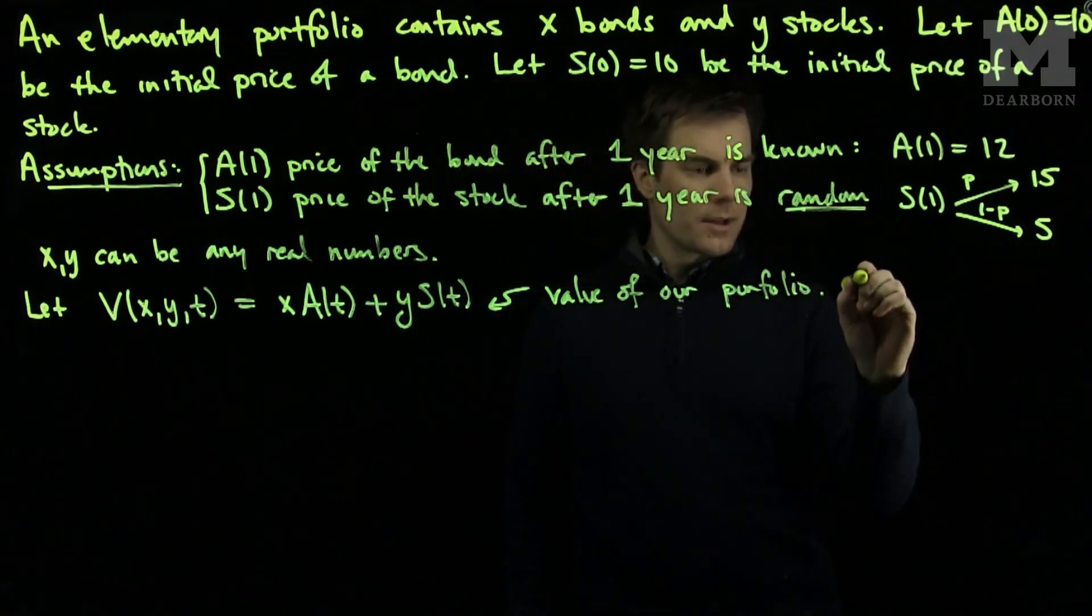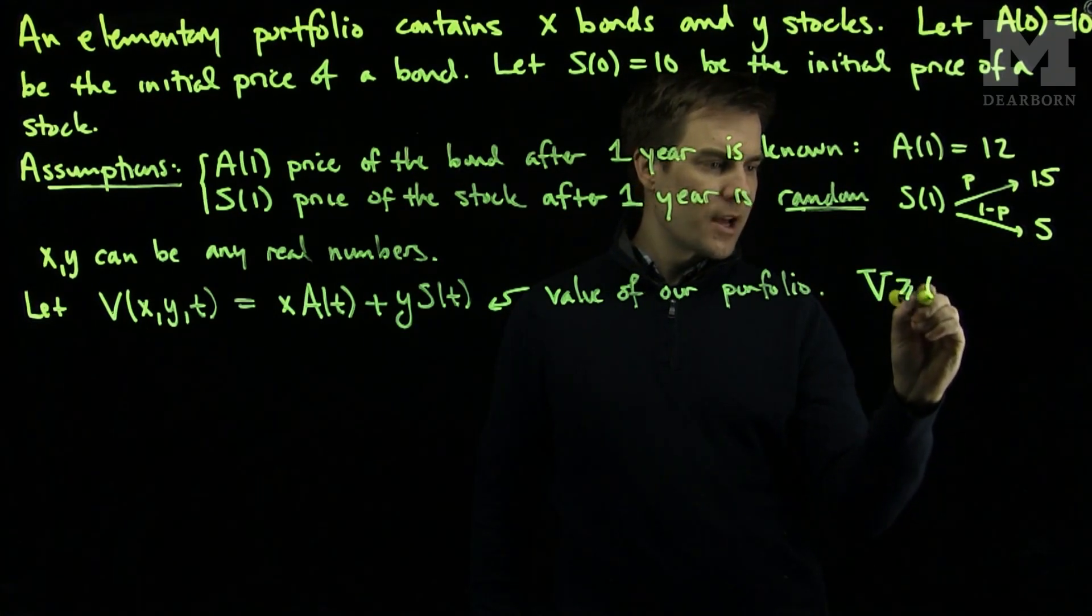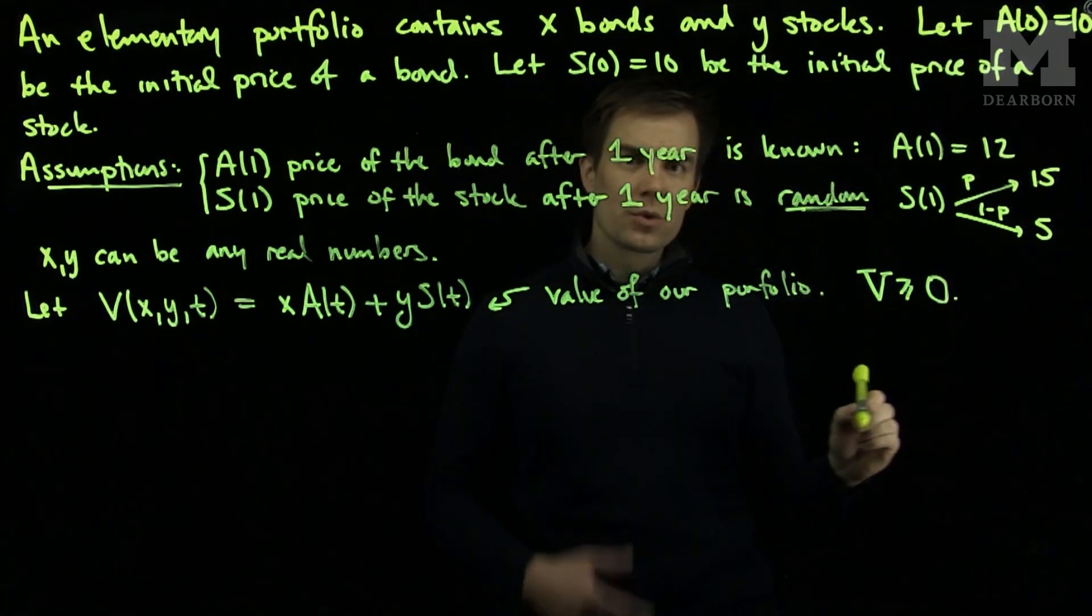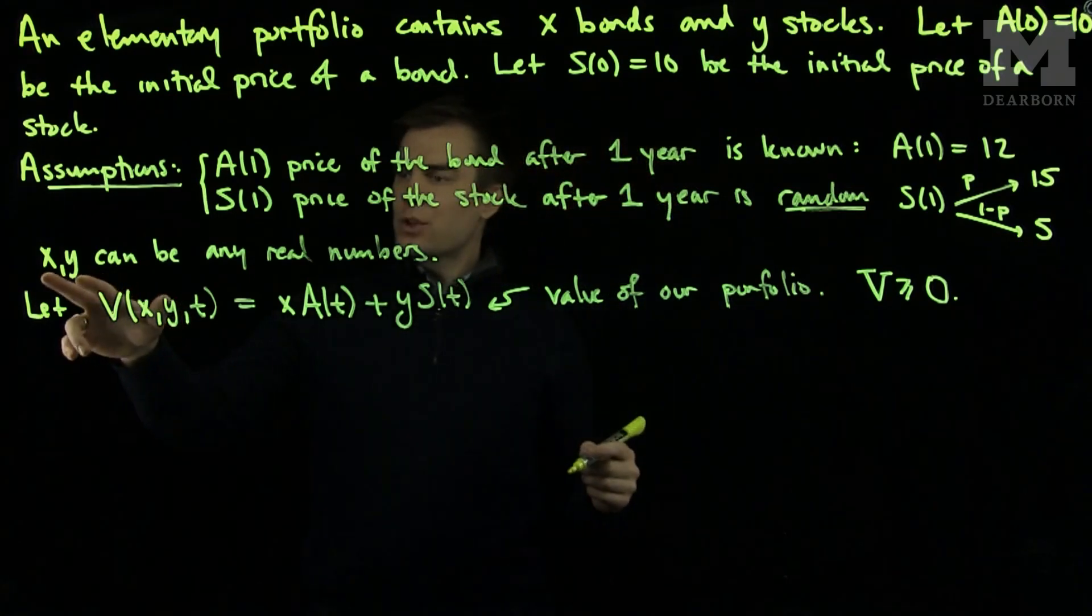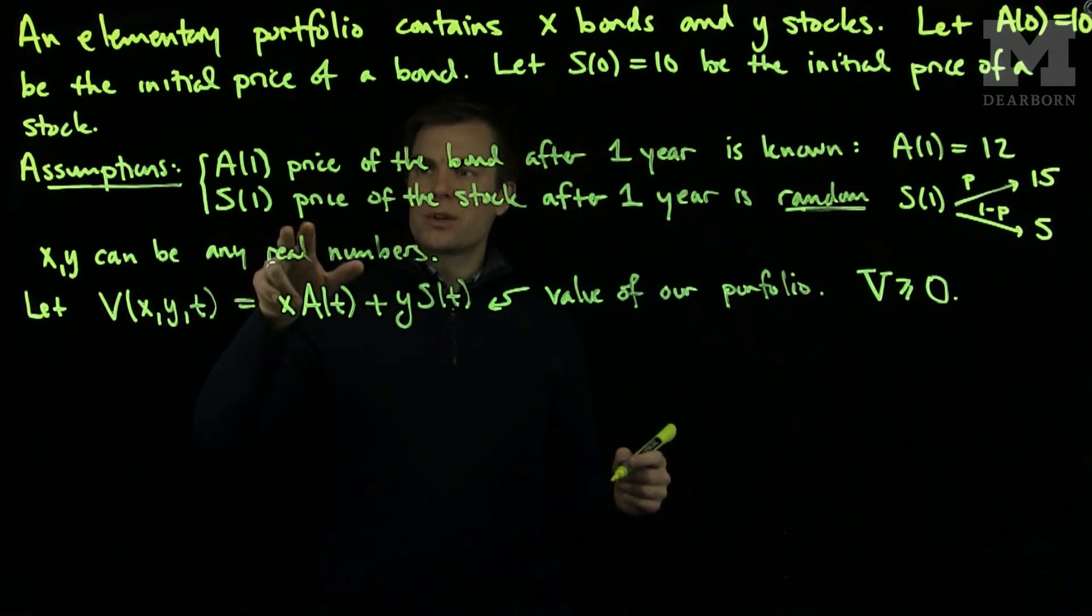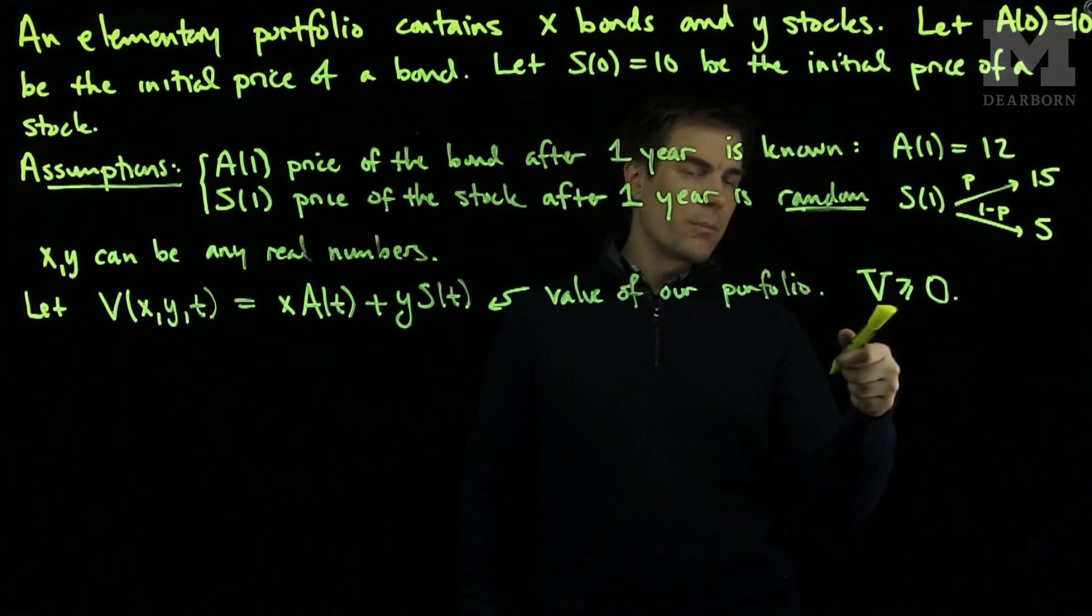We should also assume that this function V is always greater than or equal to zero. In other words, we can't have a portfolio that gets negative values. So we have the assumption that X and Y can be any real numbers, prices that are random and known, and that my portfolio can never be negative.